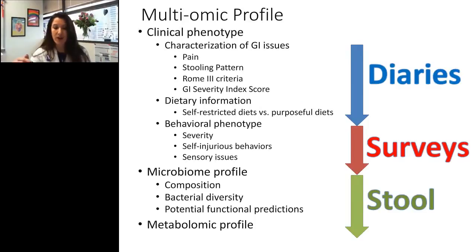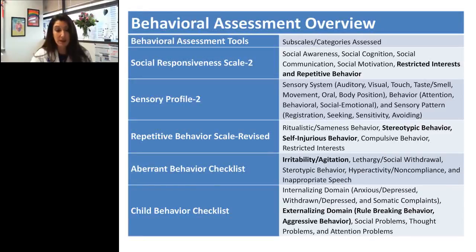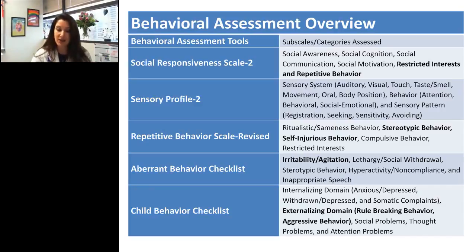Our multi-omic profile includes GI phenotype via diaries capturing pain, stooling patterns, and dietary intake, as well as evaluation based on Rome III criteria and the GI Severity Index score. We are also obtaining multiple behavioral surveys along with a stool specimen for microbiome and metabolome characterization. We hope to characterize participants based on potential severity and problem behaviors possibly associated with GI pain, such as self-injury.